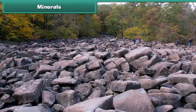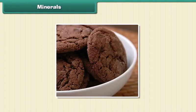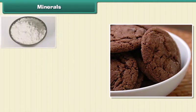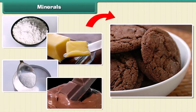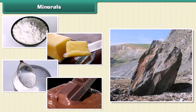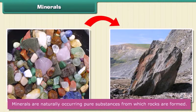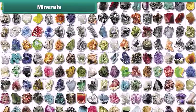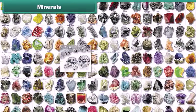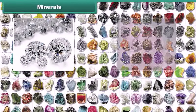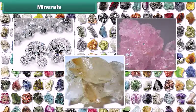Minerals. We have learned about rocks. All rocks are made of minerals. Think of a chocolate cookie as a rock — the cookie is made of flour, butter, sugar, and chocolate. The cookie is like a rock, and the flour, butter, sugar, and chocolate are like minerals. Thus, minerals are naturally occurring pure substances from which rocks are formed. There are about 3,000 different minerals in the world, among which diamond is the hardest. Quartz and calcite are two common examples of minerals.